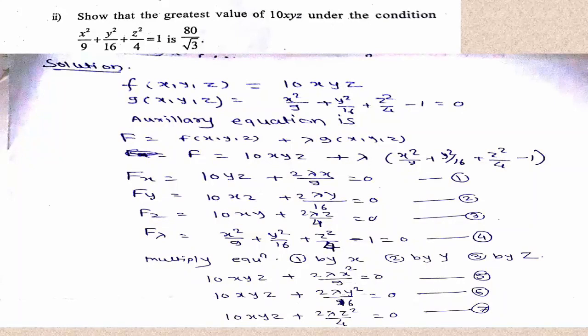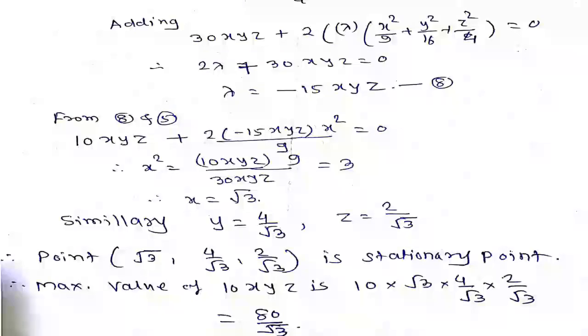Multiplying equation 1 by x, equation 2 by y, equation 3 by z: 10xyz + 2λx²/9 = 0; 10xyz + 2λy²/16 = 0; 10xyz + 2λz²/4 = 0. Adding these equations: 30xyz + 2λ(x²/9 + y²/16 + z²/4) = 0. From the constraint, x²/9 + y²/16 + z²/4 = 1, so 2λ + 30xyz = 0, hence λ = -15xyz.